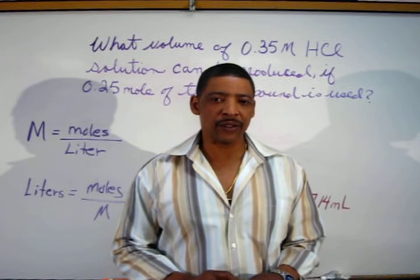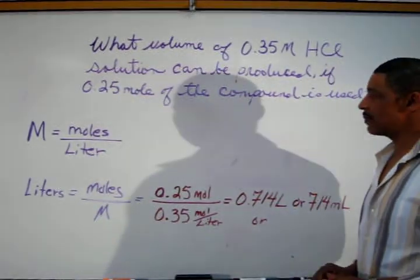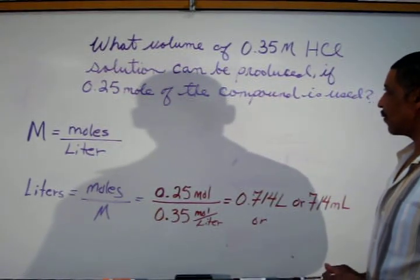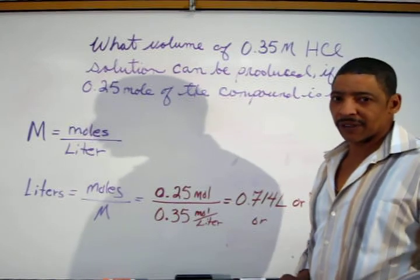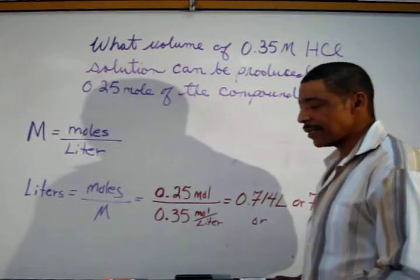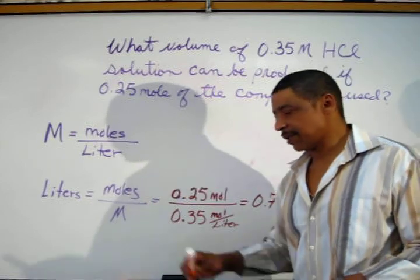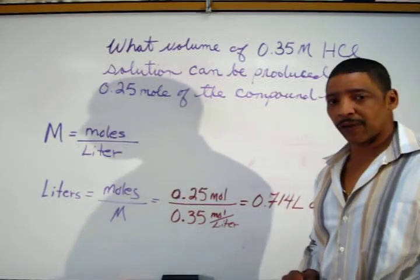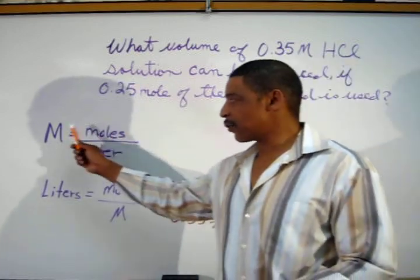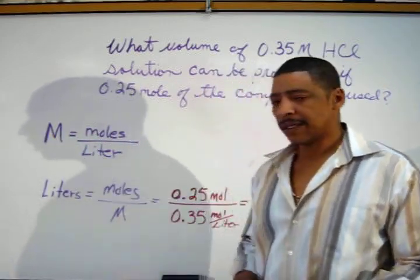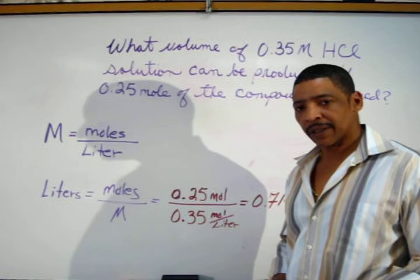The molarity formula may also be used to determine the volume of the solution. Consider the following practice problem. What volume of 0.35 molar HCl solution can be produced if 0.25 mole of the compound is used? The volume may be easily calculated by using the molarity formula. However, in this particular case, the molarity formula must be rearranged to solve for the volume. To do so, simply multiply through by liters and divide through by the molarity. This will yield the relationship where liters are equal to the number of moles divided by the molarity.